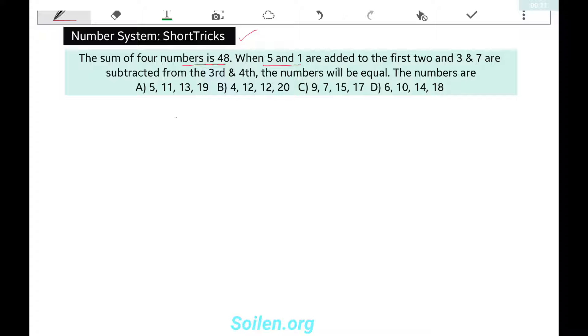When 5 and 1 are added to the first two, and 3 and 7 are subtracted from the third and fourth, the numbers will be equal. Find the numbers.